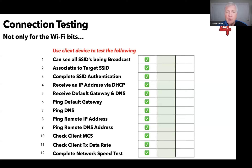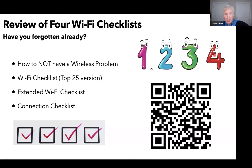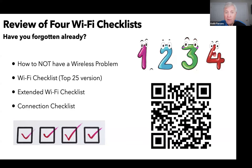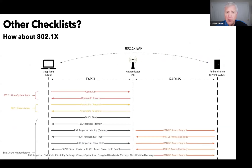So we need to understand the big picture of things. Today I talked about four checklists: the 'I don't have a wireless problem' checklist, the top 25, the extended list down to 66, and the connection checklist. You can get all of those at the QR code URL which also has access to all the resources. I'd like to talk about one more thing - this shouldn't be the end. We need to keep working on checklists. Matt and Mac put together a ladder diagram for 802.1x, and I think as a community we need to build a checklist for dot-1x because dot-1x is a pain.